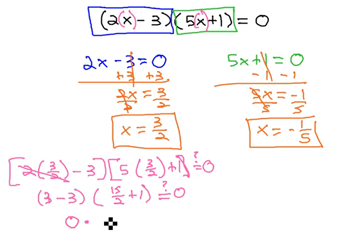Times 15 halves, plus 1, is 17 halves. And 0 times anything, 0 times the 17 halves, is 0. It checks. It works. 3 halves is the first solution.